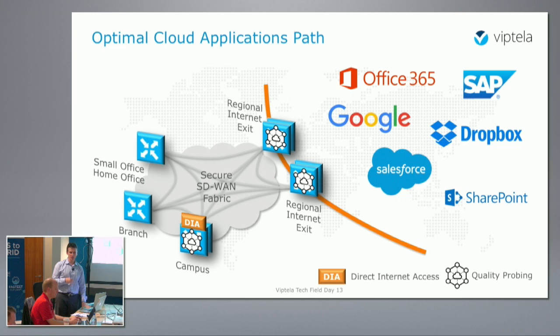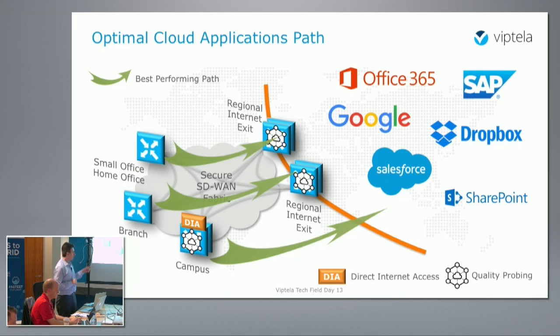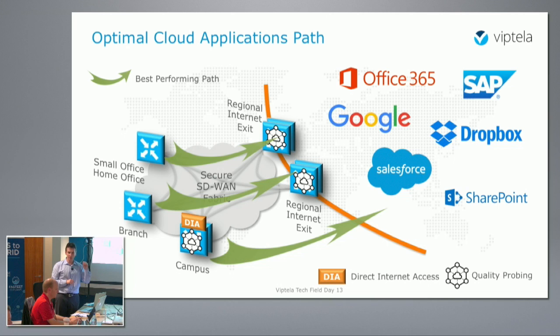The network intelligence will determine the best path for you. For sites without direct internet access, it will choose the best exit through one of the regional points based on performance. For sites with DIA, you can go directly — which wins most of the time. But if your local ISP is having issues, maybe it's better to send traffic to a regional exit. If I'm hybrid with a broadband connection that's misbehaving, I can backhaul to the regional facility and exit from there. Network intelligence decides which way is better.